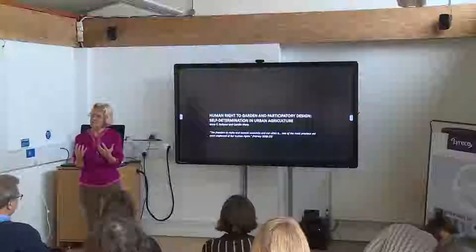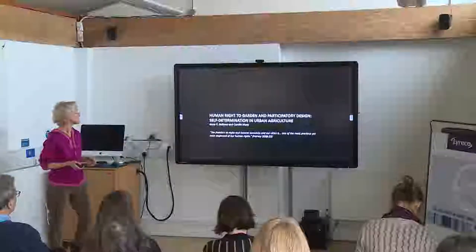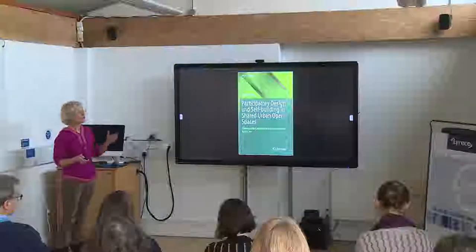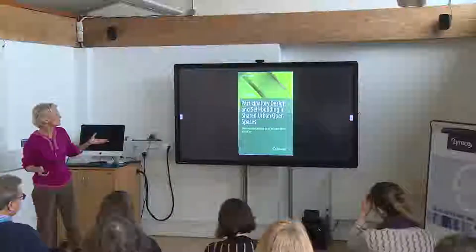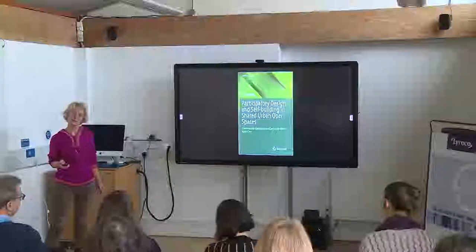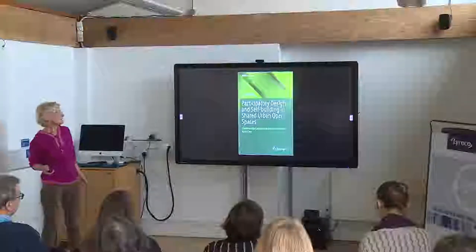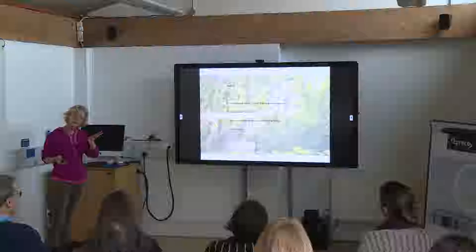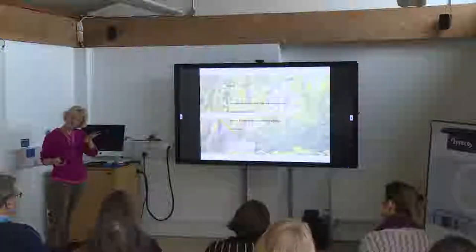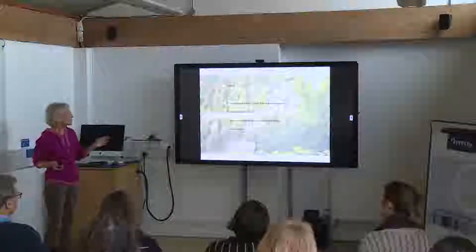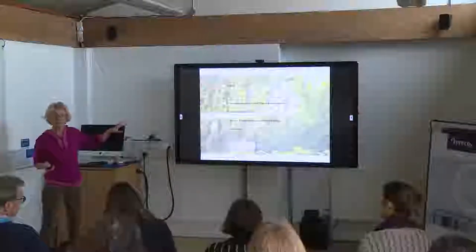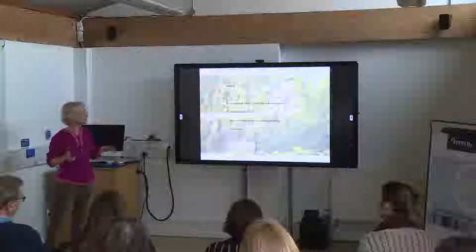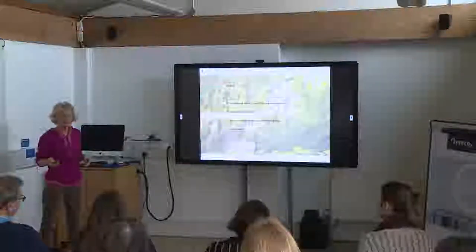What you'll see in orange will be the main points. This is a book that came out of her work — Participatory Design and Self-Building and Shared Urban Open Spaces — it just came out this past year. So, an outline: I'll start with a conceptual overview, a historical review of gardens in New York City, human rights claims for urban land tenure, coming out of research that Carolyn did, and we worked on together — then I'll go to my perspectives and a short conclusion.